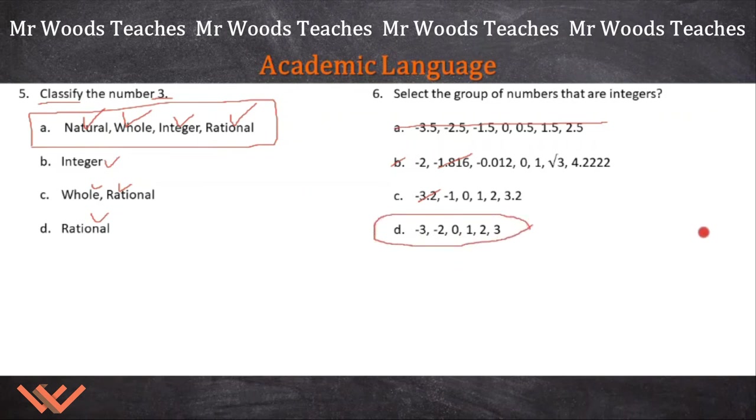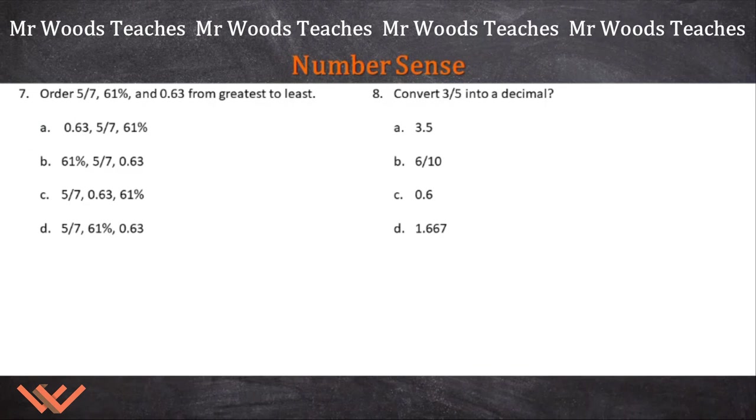You're going to have to understand that we're working with very specific vocabulary or academic language for mathematics. We started out with basic number sense, and now we're getting into something that's more advanced, but it's still part of your basic understanding of adding, subtracting, working with different types of numbers. Number seven, order five sevenths or five divided by seven, 61% and 0.63 from greatest to least. This right here is like, it's not a decimal. This is almost a decimal. And this is a decimal. What I would do would be to convert everything to decimal. 61%, we just divide that by 100, so it's going to be 0.61. So we're going from greatest to least. And I know 0.63 is greater than 0.61.